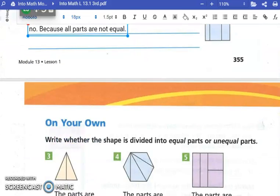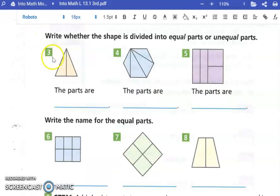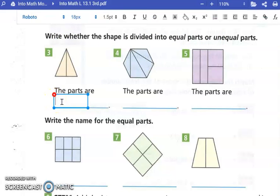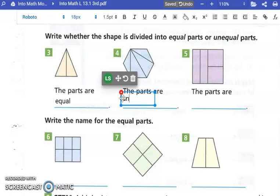Let's talk about the on your own. It says, write whether the shape is divided into equal parts or unequal parts. Number three, what did you all put? Equal. How about number four? Unequal. Now, what did you all put on number five? Unequal. It is equal.